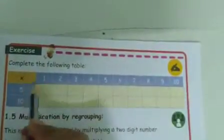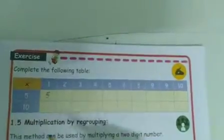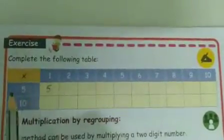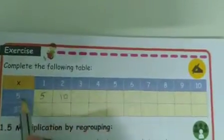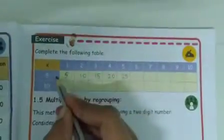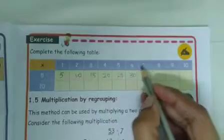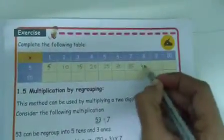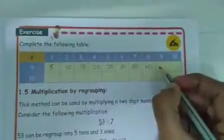Now let's write the 5th table. 1 five is 5. 2 fives are 10. 3 fives are 15. 4 fives are 20. 5 fives are 25. 6 fives are 30. 7 fives are 35. 8 fives are 40. 9 fives are 45. 10 fives are 50.